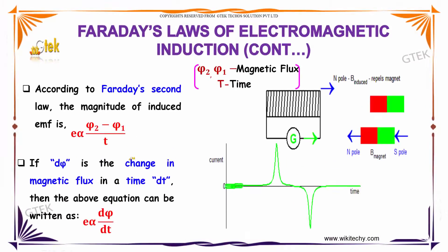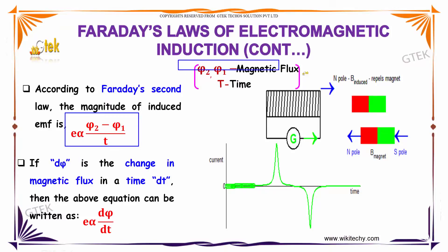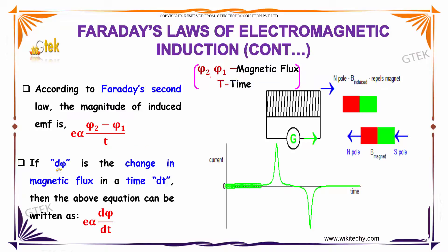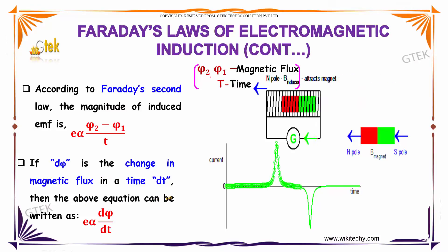According to Faraday's second law, the magnitude of induced EMF is directly proportional to (π₂ − π₁) divided by t. Here π₁ and π₂ represent magnetic flux. If dπ is the change in magnetic flux in a time dt, then the equation can be rewritten as e is directly proportional to dπ divided by dt.